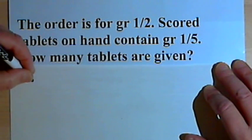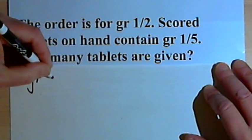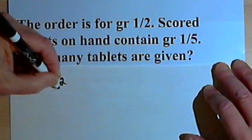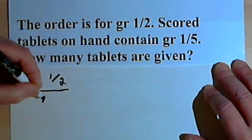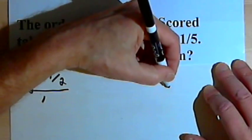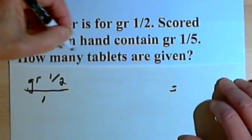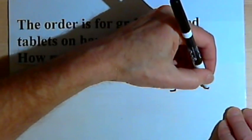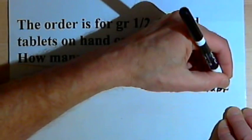Okay, so we'll start out with the order. That was one-half of a grain, we'll make that whole thing a fraction over one, and we know we want to end up with tablets, so we'll put that unit over here on the right, tablets.